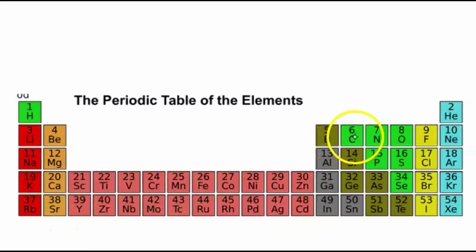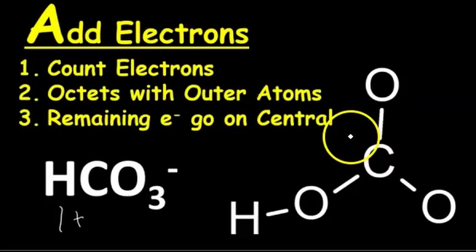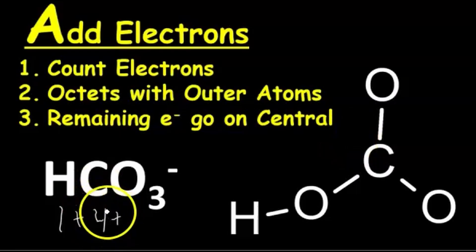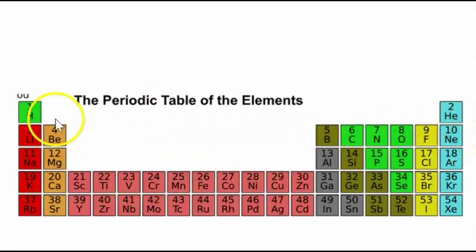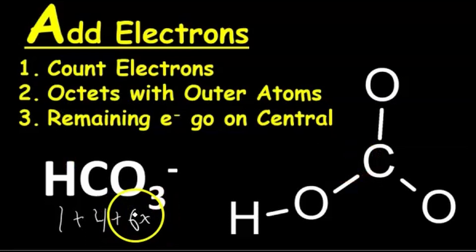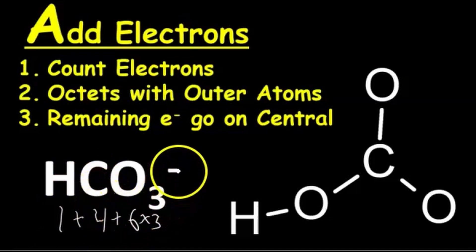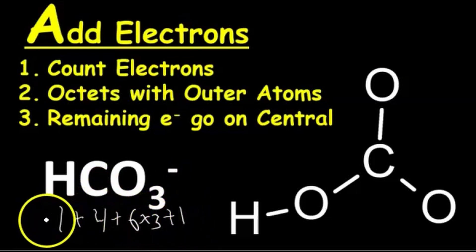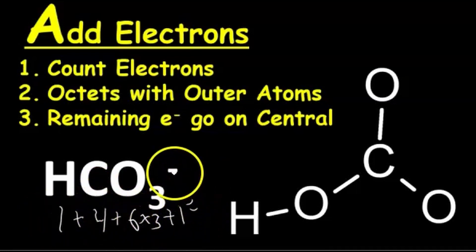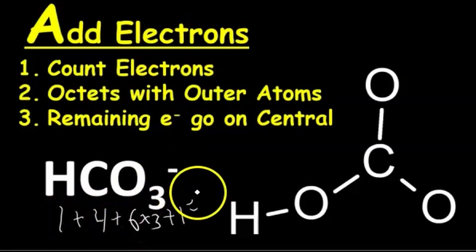For carbon, we look at the period it's on, start from the left, and count until we get to carbon: one, two, three, four. So there are four valence electrons around carbon. Oxygen is here — start from the left: one, two, three, four, five, six. So there are six electrons around each oxygen, times three oxygens. Since HCO3- has a negative charge, there's actually one more electron than expected, so we add one. Adding all of this up gives us 24 total electrons to add to our structure.